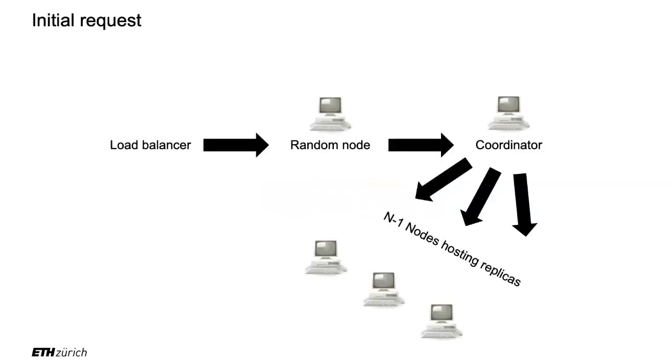When you have the request and zoom out on the architecture: you have the client with a read or write request. They contact a random node on the ring.